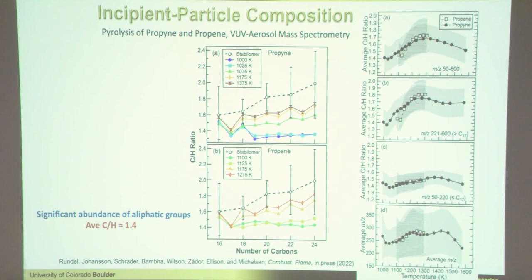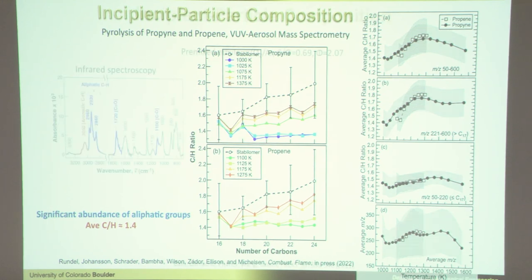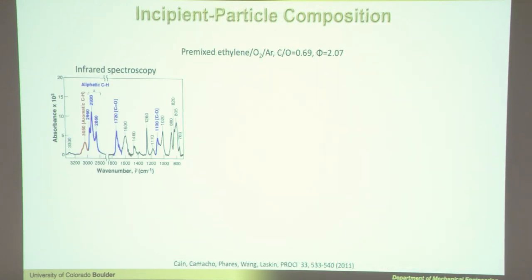We have a significant abundance of aliphatic side chains, and our C/H ratio is about 1.4 for all of those experiments.